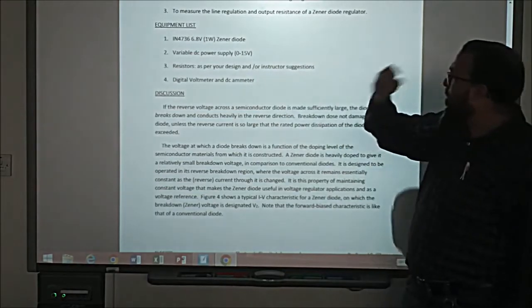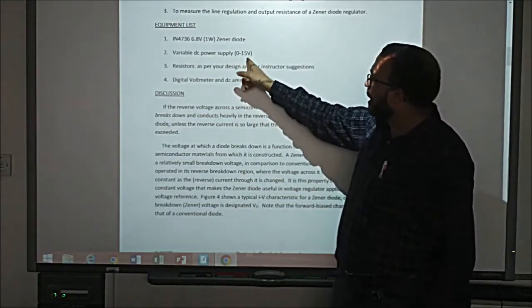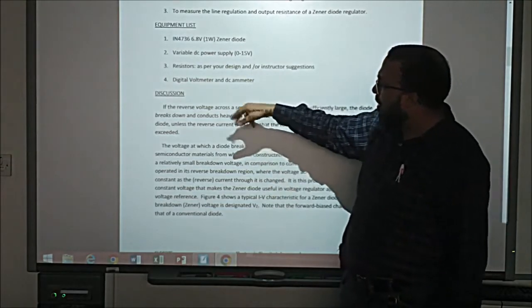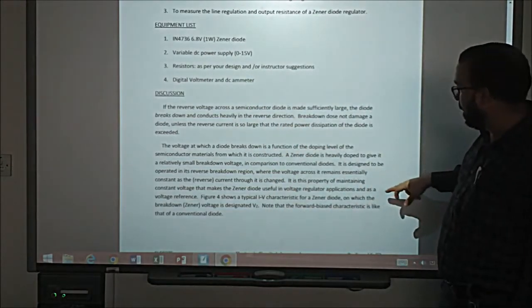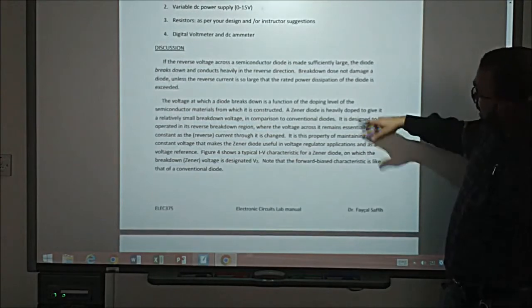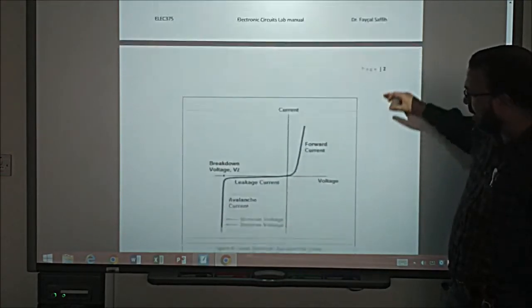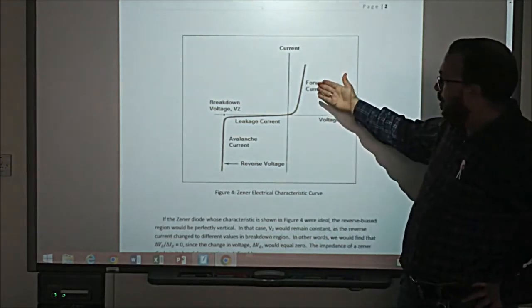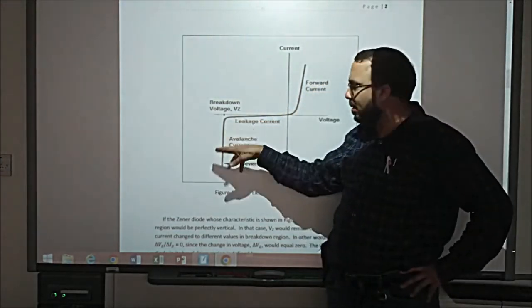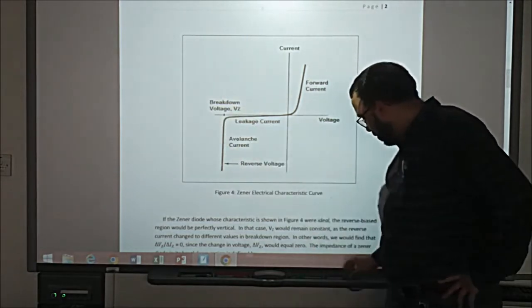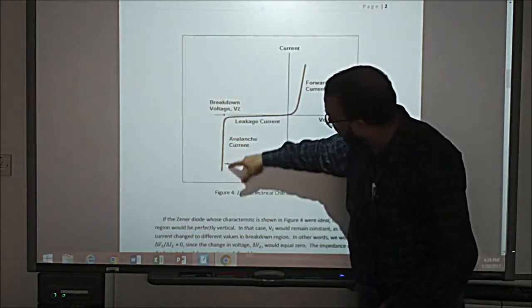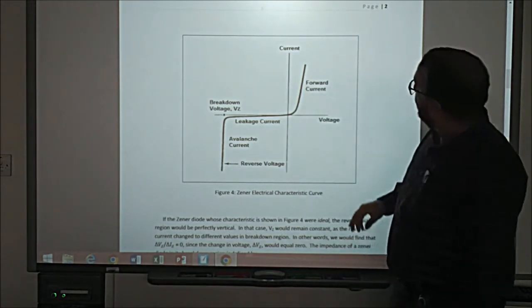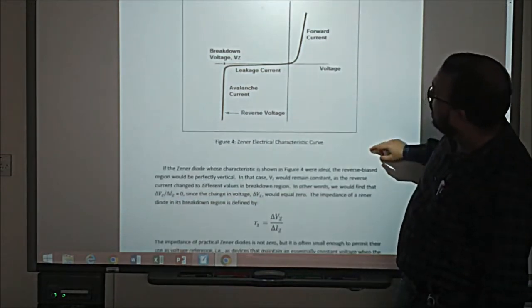We are going to use DC power supply, of course, it has to be enough range from 0 to 15. Resistor and the digital voltmeter. The discussion, we already discussed it. This is the characteristic: forward, reverse, and breakdown. The breakdown here, is it working or not?